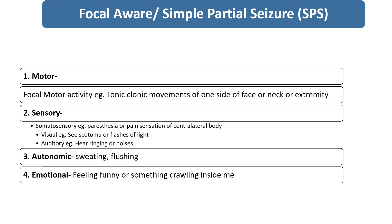Focal aware seizures can have motor phenomena — tonic-clonic movements of one side of the body, either of the face, neck, or extremities.